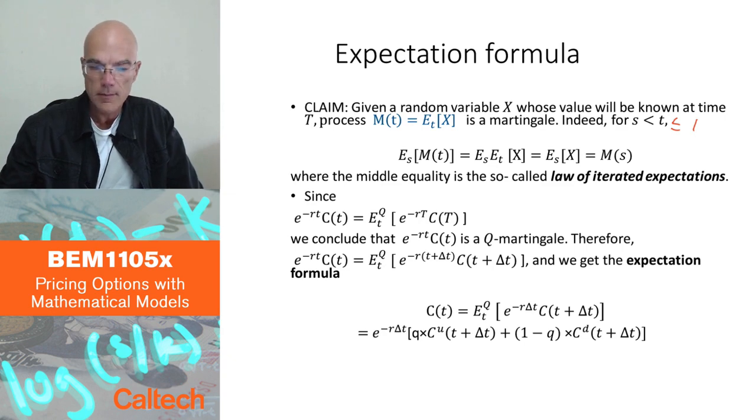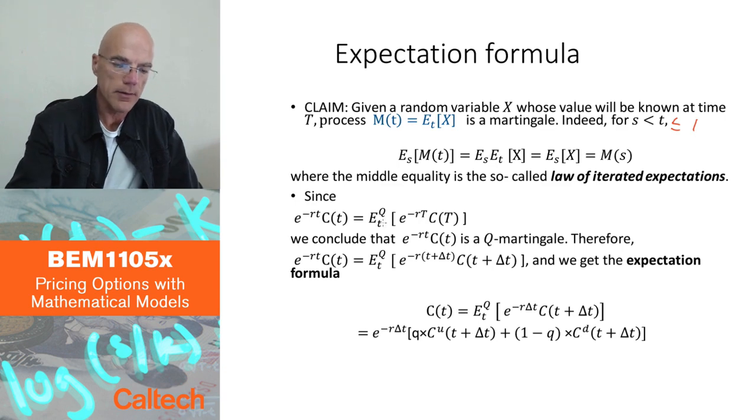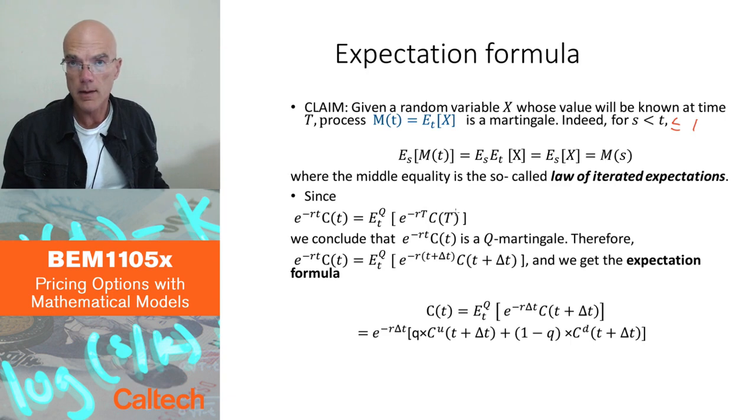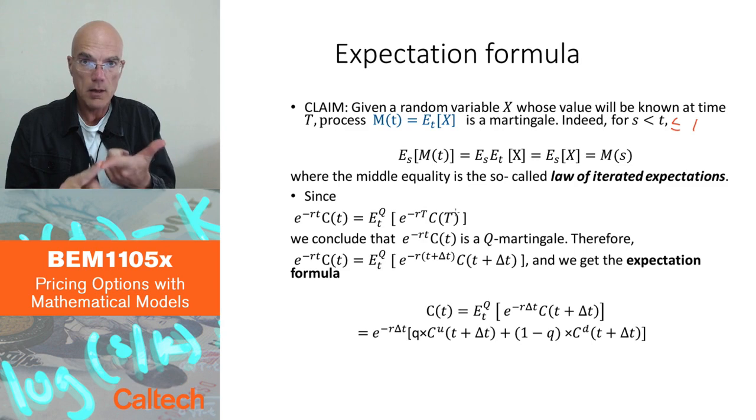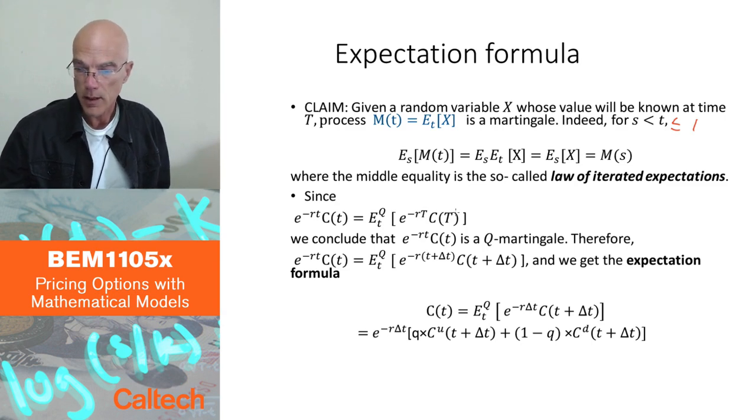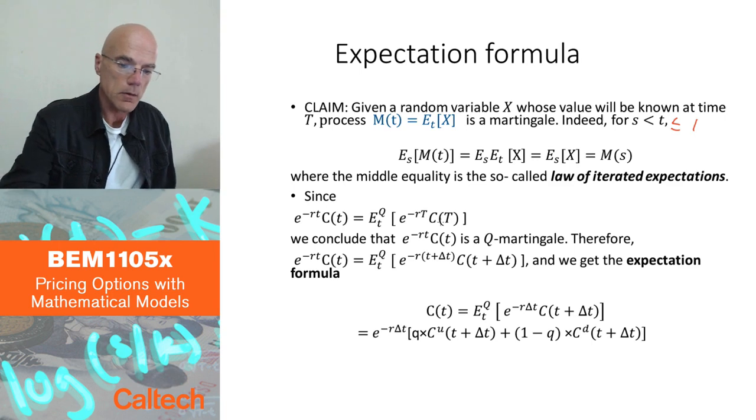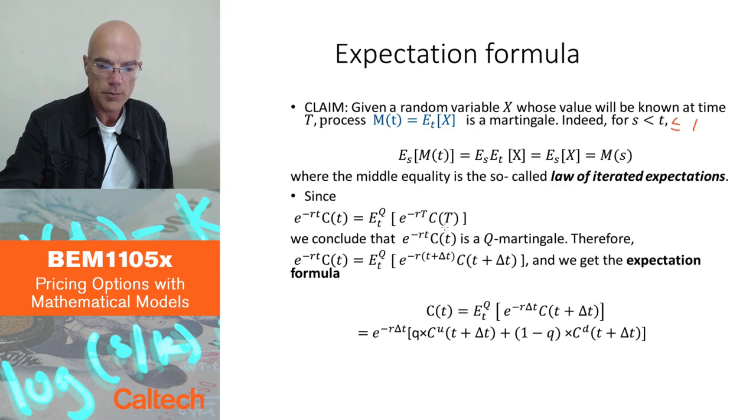Simply put, price of anything, value of anything under a pricing probability Q, under martingale probability Q, is a martingale. The discounted prices. Discounted price of the stock is a martingale. Discounted value of a wealth process is a martingale. But this also says that discounted price of any claim is also a martingale. So it's not so surprising that we have this. Right? So discounted price of a claim c is a martingale.